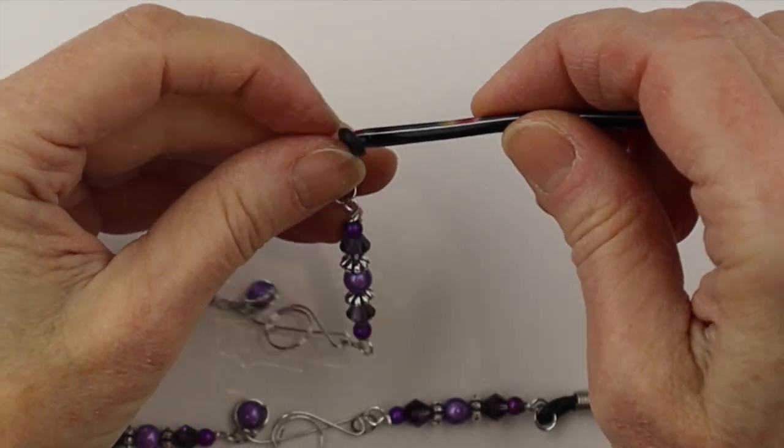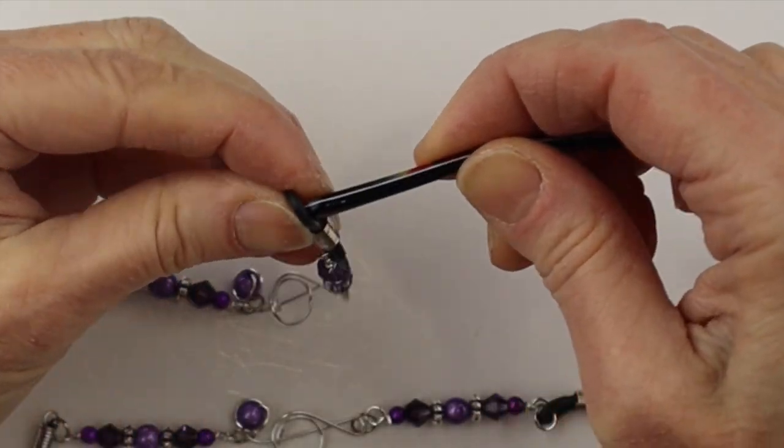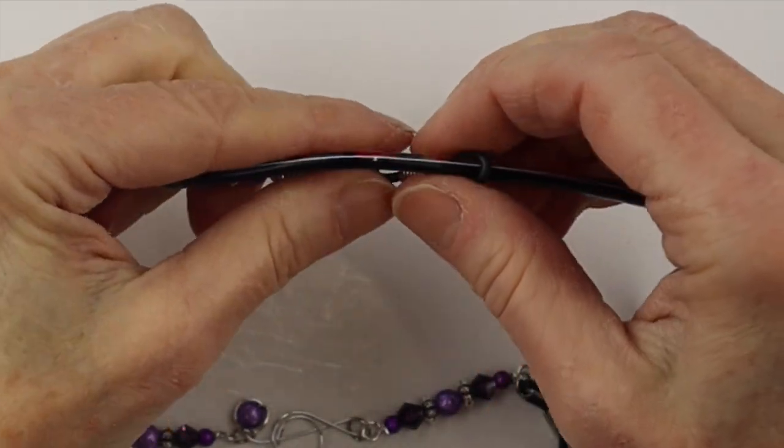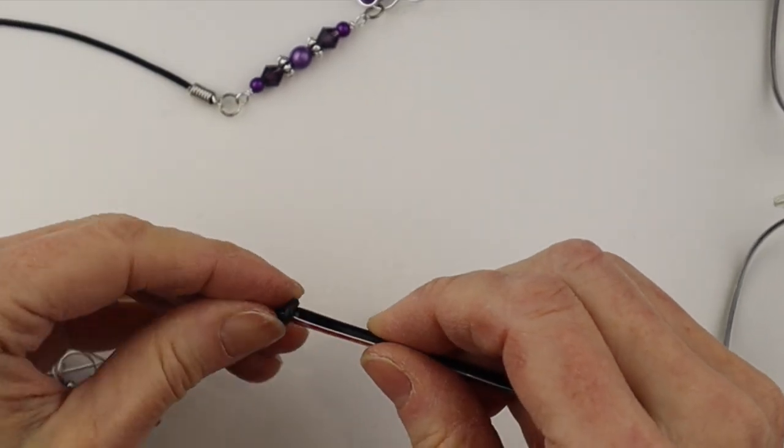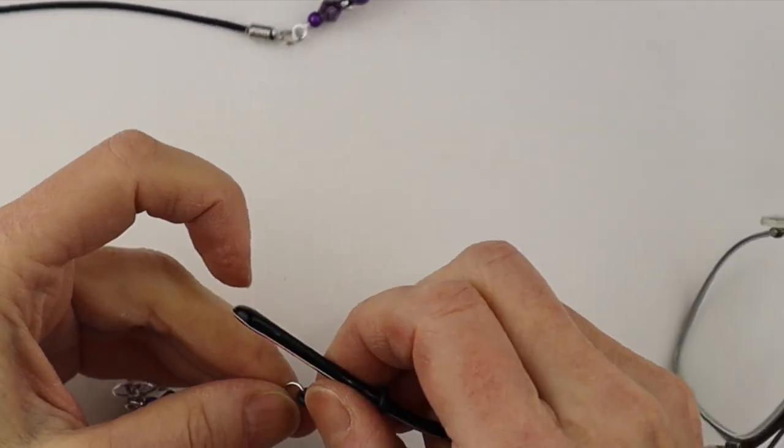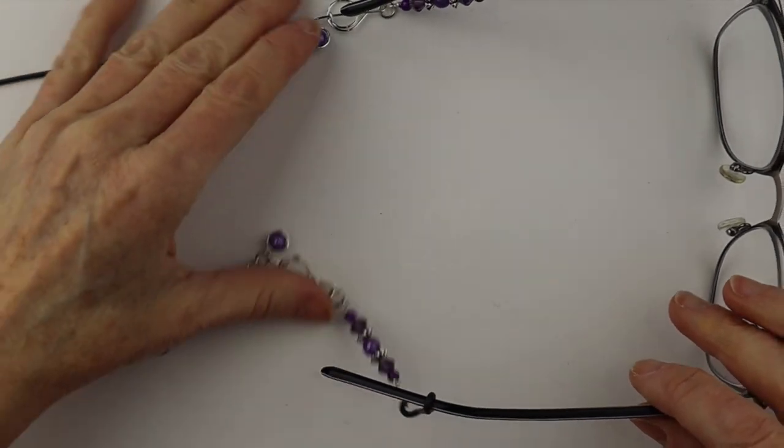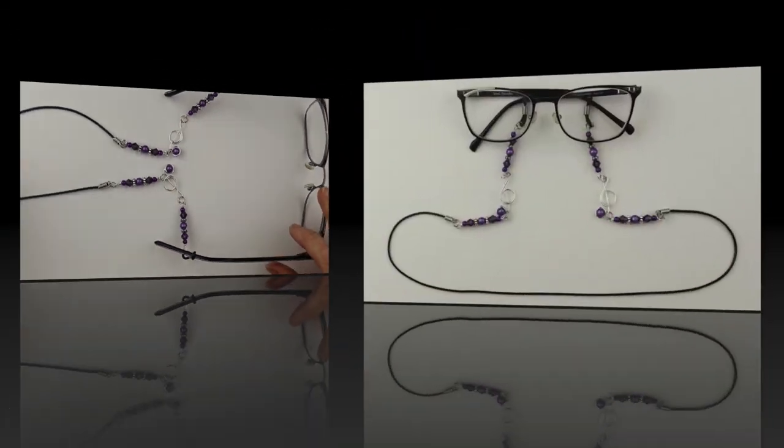And then all you have to do is take the end of your glasses and slide the rubber thing on there. And just push up the spring to hold it in place. Put on the other one. And there you have your beautiful beaded eyeglass holders.